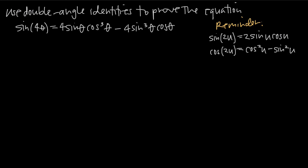In this video, we're talking about how to use double angle identities. In this particular problem, we're going to be using double angle identities to prove that this equation is true. On the left-hand side currently, we have sine of 4 theta. On the right-hand side, we have 4 sine theta cosine cubed of theta minus 4 sine cubed theta cosine of theta.